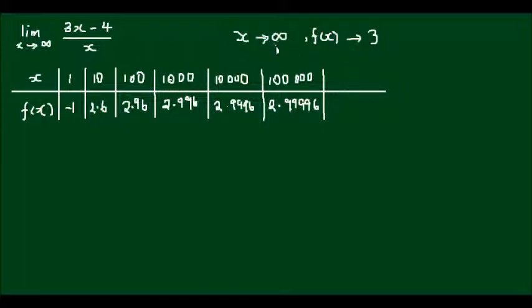So as x gets larger and larger, the function gets closer and closer to the number 3. Therefore we say the limit as x approaches infinity of 3x minus 4 over x is equal to 3.